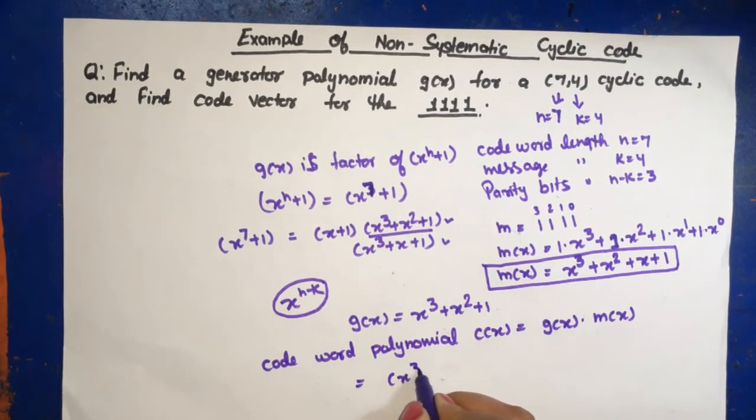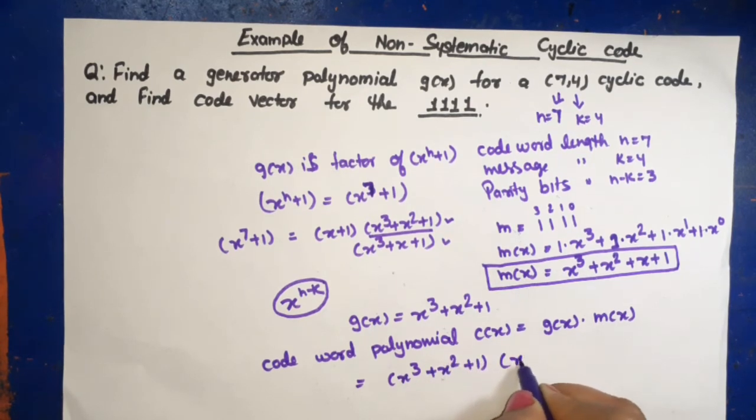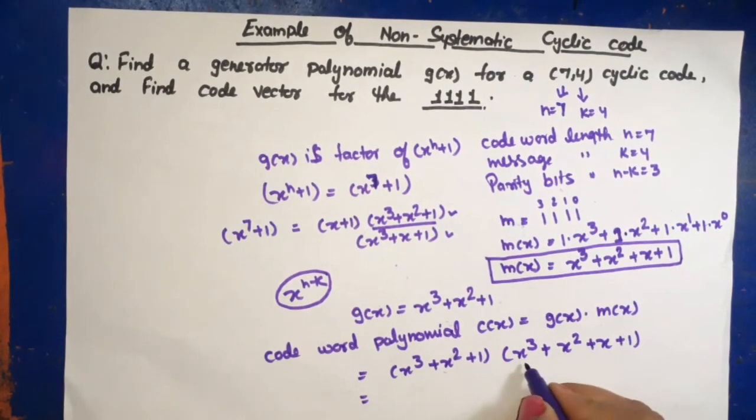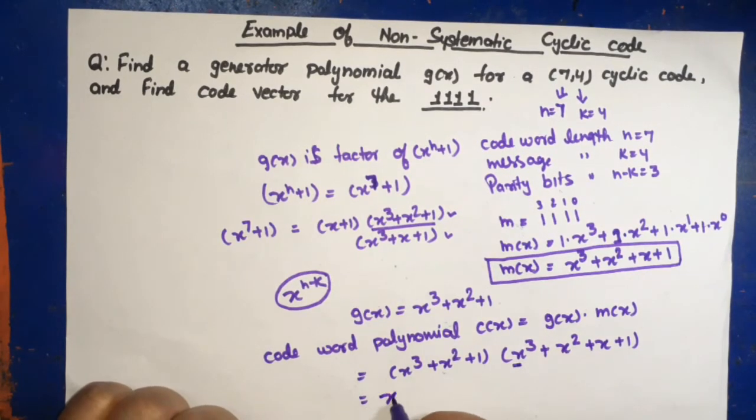g(x) is x cube plus x square plus 1, multiply with x cube plus x square plus x plus 1, one by one multiplication. x^3 gives x raised to power 6, x raised to power 5 plus x cube.